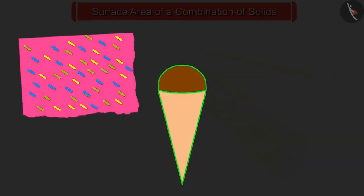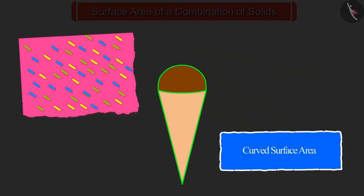Now if we have to put a paper cover on this ice cream cone, how much paper will we need? Correct, for this we will have to find the curved surface area of the ice cream.